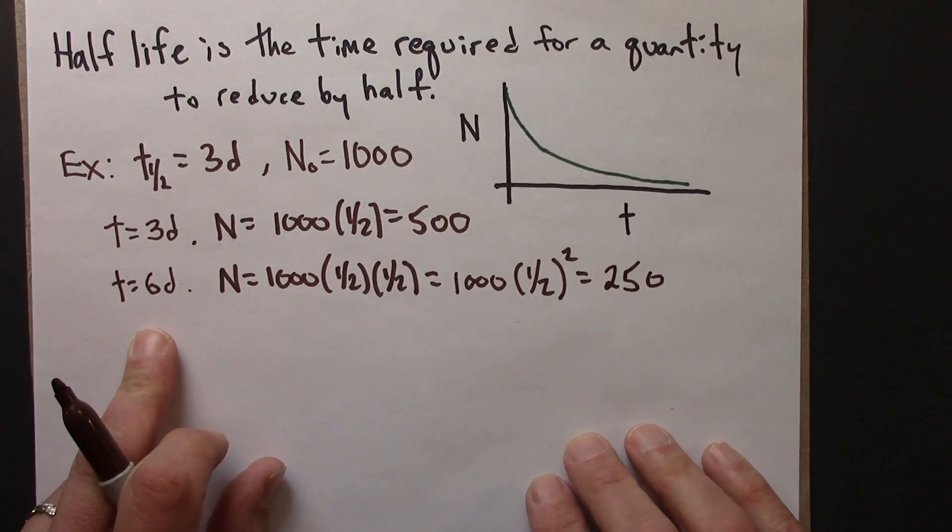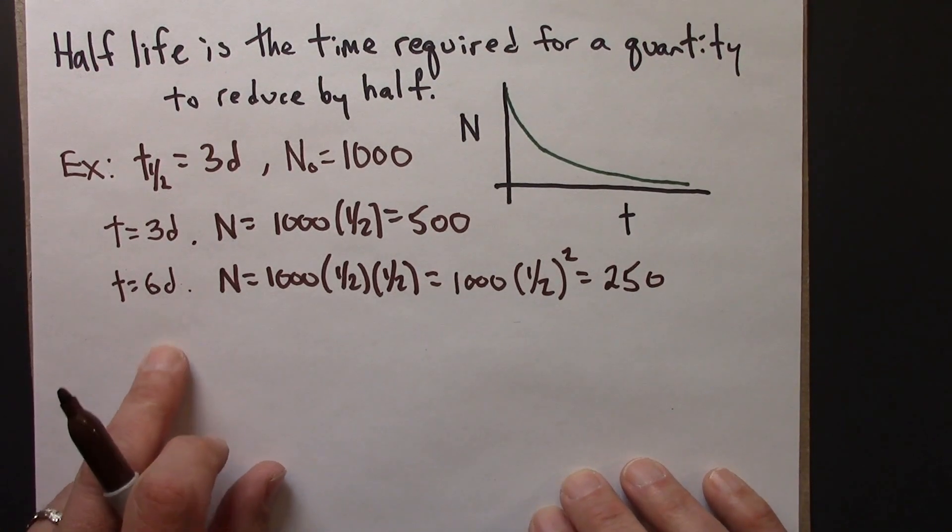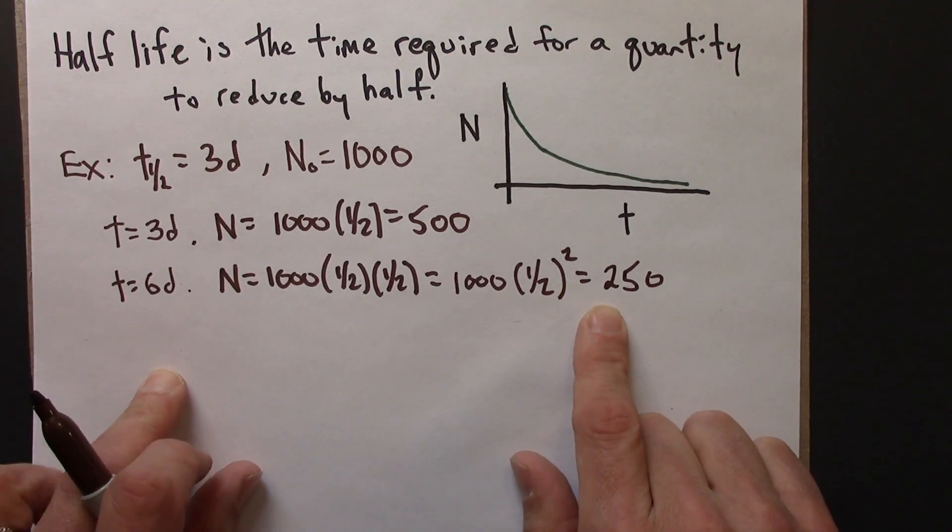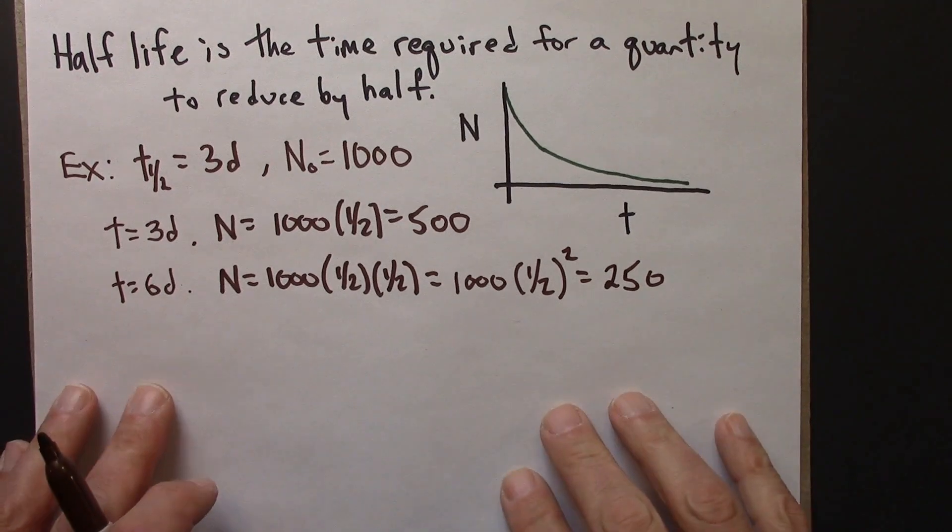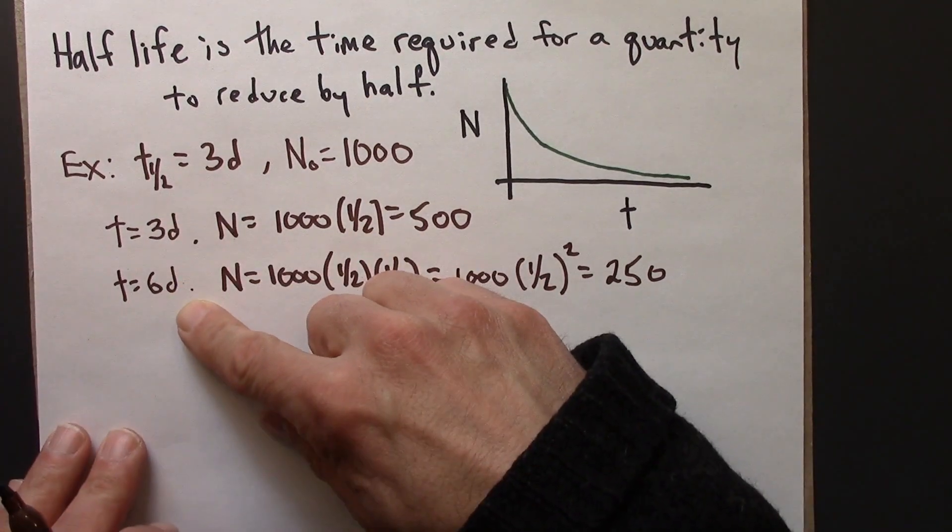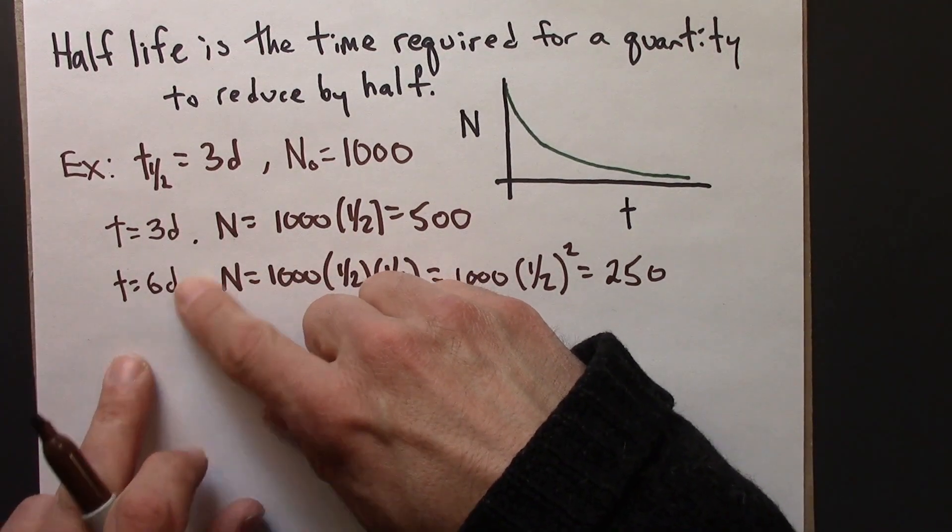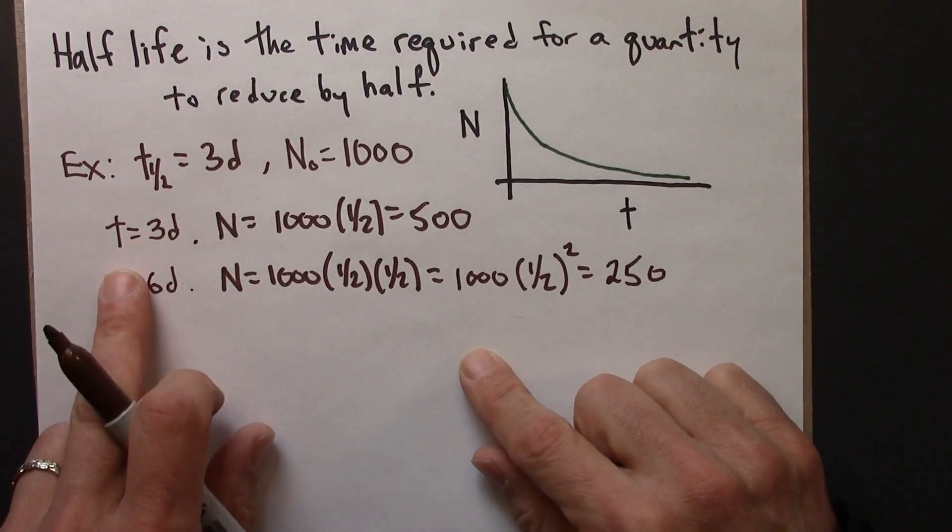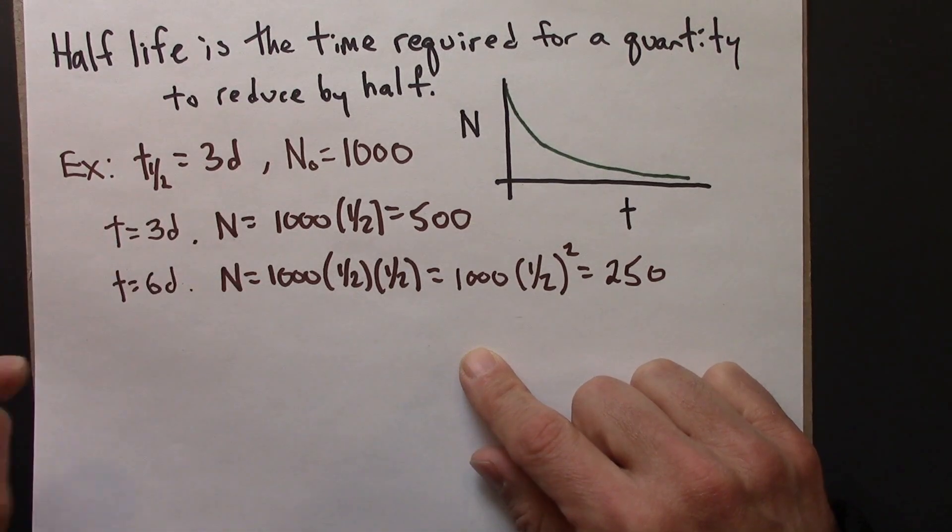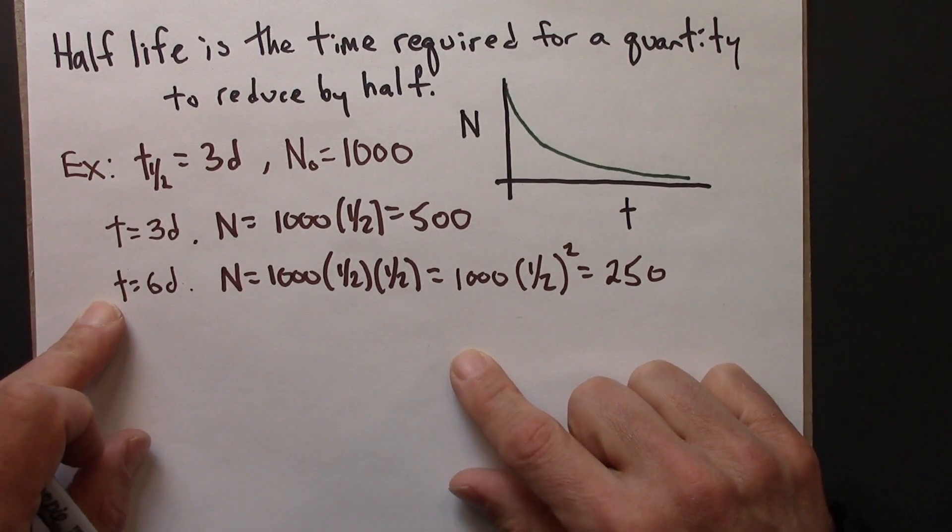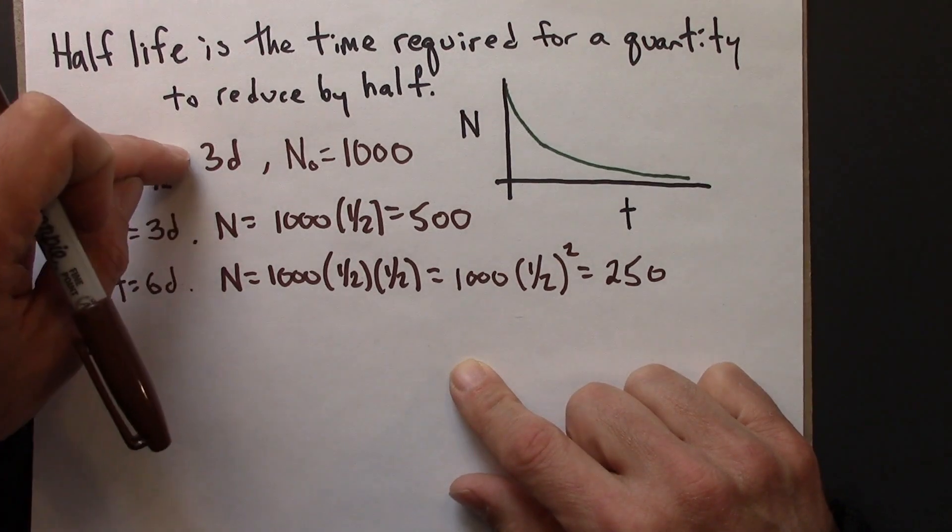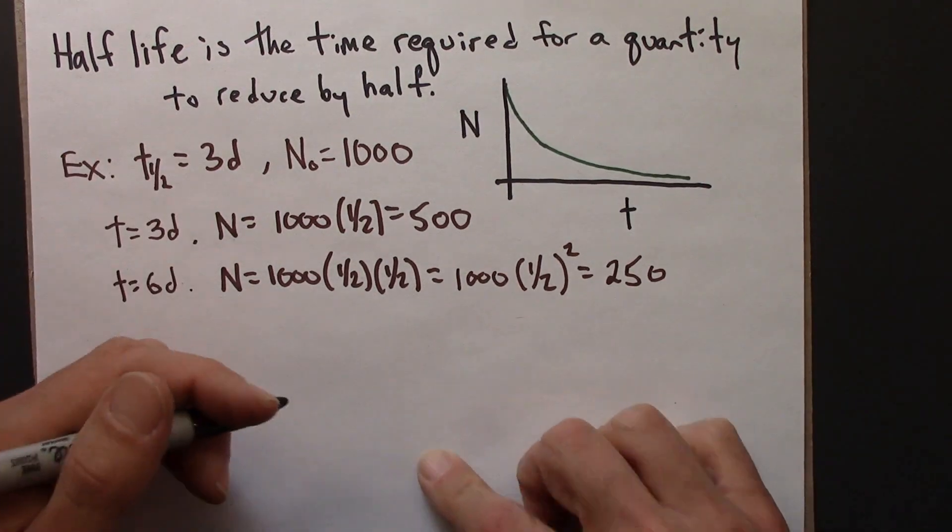So we could figure out the amount at day 9 and 12. Every time we would just multiply this again by a half. What if though if we wanted to know a day that wasn't a multiple of three? The trick then is we would need to express that time as a multiple, might not be an integer multiple, of the half-life.